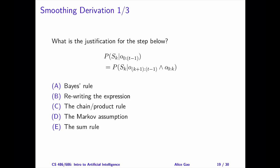Step 1. Pause the video and choose an answer. The correct answer is B, rewriting the expression. We split the sequence of observations into two parts. The second term contains the observations from the start to day k. The first term contains the observations from day k plus 1 to the end.